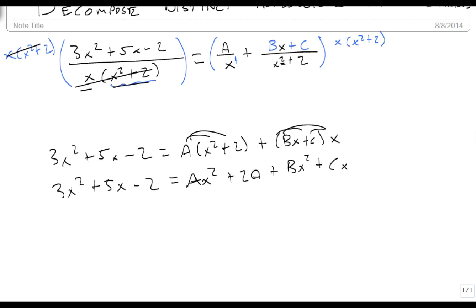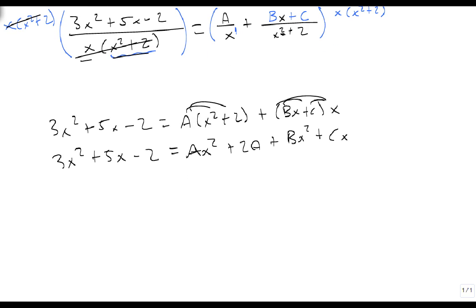If you're looking at this, notice this is already working out very nicely for us. We're going to start with our x squareds. That's A plus B equals 3. For our x's, we get C equals 5, and that's it. Which is really nice, we're done already. And for our constants, we get 2A equals minus 2. Notice how nicely this worked out for us.